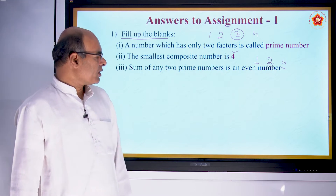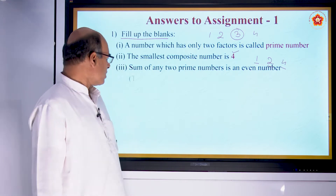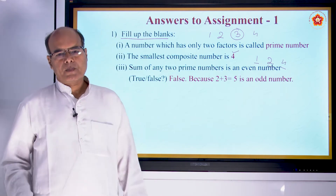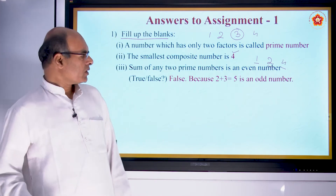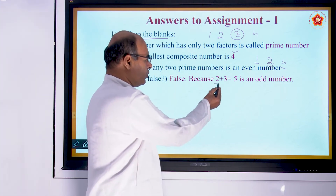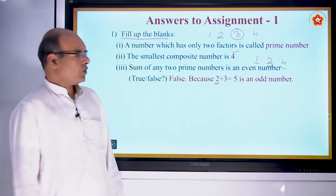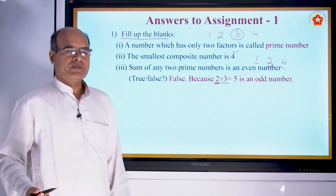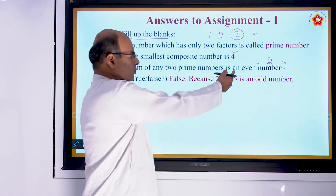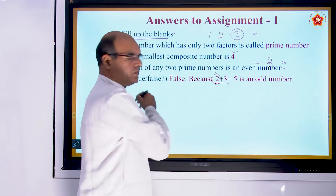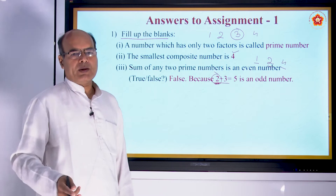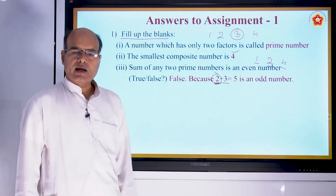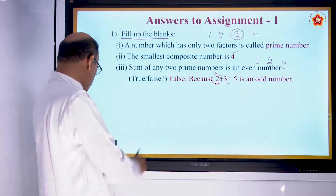The next question: 'Sum of any two prime numbers is an even number.' This is asked as true or false. It is false, because 2 is a prime number, and 2 plus 3 gives an odd number, not even. So it is not always true. If you take any two prime numbers other than 2, then you always get an even number, but generally the statement is false.